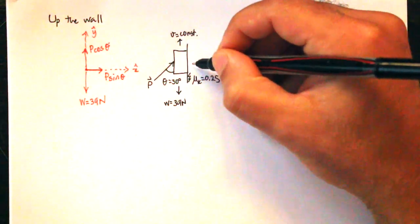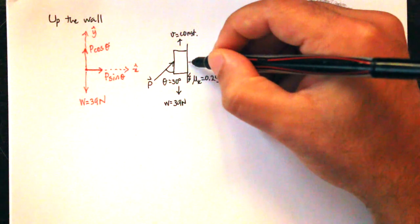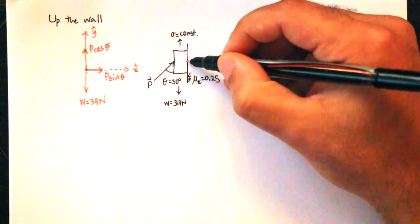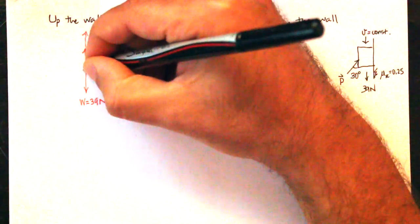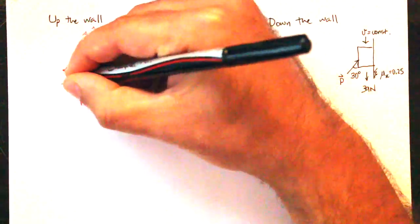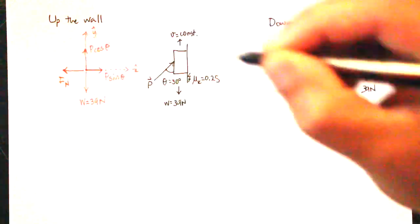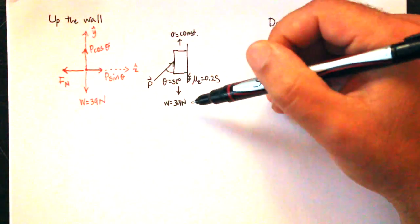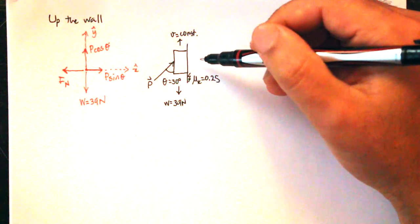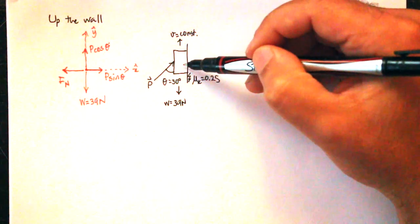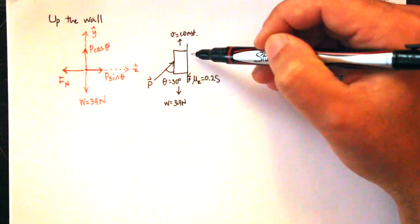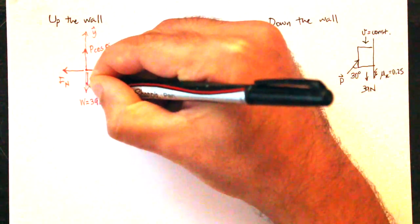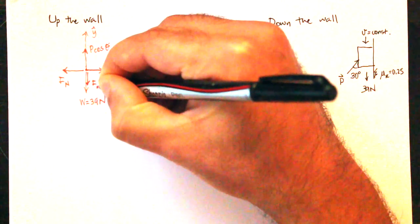Because P sine 30 points toward the wall, the wall responds with a normal force pointing away from the wall. Since there is a normal force, there is also a friction force. For the case where the block is moving up the wall, friction opposes the motion, so the friction force points downward.